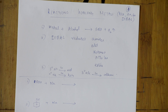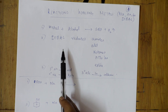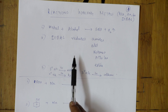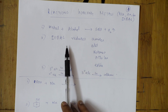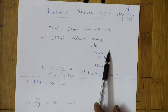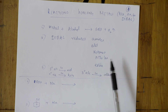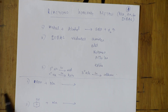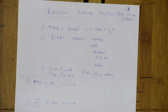Whenever you see DIBAL in the paper, remember it basically reduces amides, aldehydes, ketones, nitriles, and esters. Any of these may be given with DIBAL — don't get confused. I'll show you how to convert each into the product.